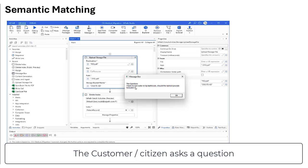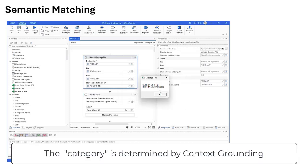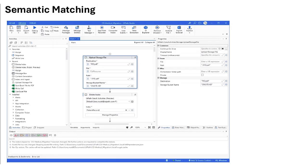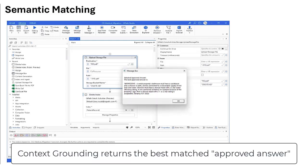Let's see this in action within Studio. Here we've got the question, and we've got the categorization. Context grounding is now producing a list of filtered approved answers just for that category. That's going to be used in the context grounding prompt, and here it has found a matching approved-only answer.